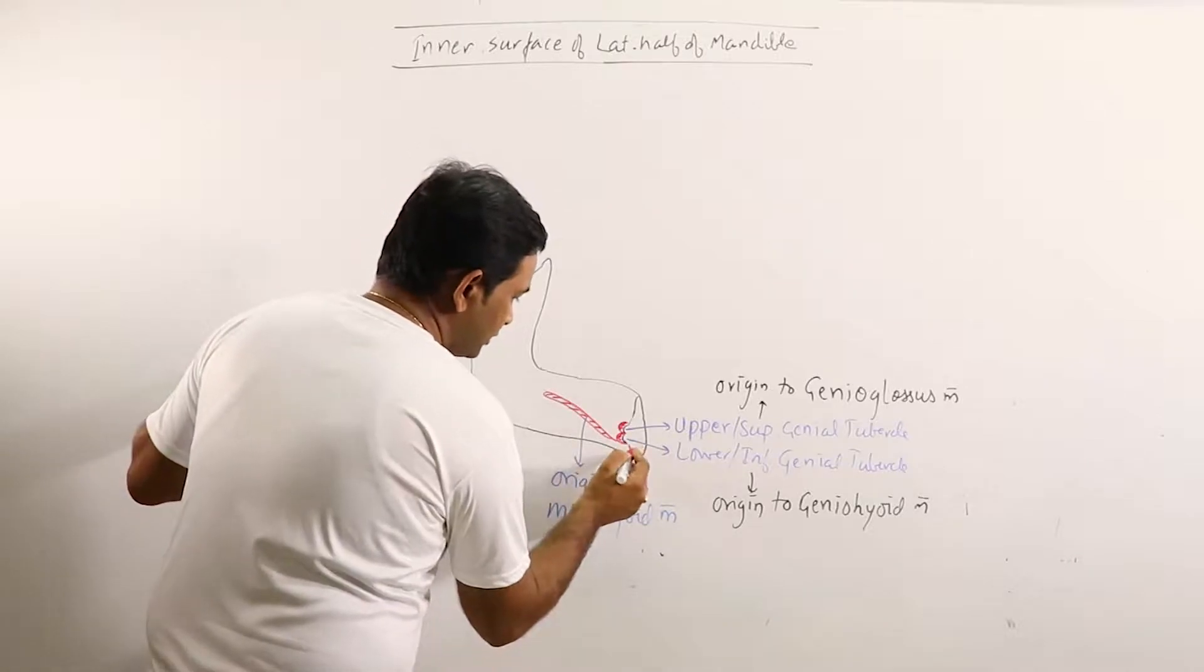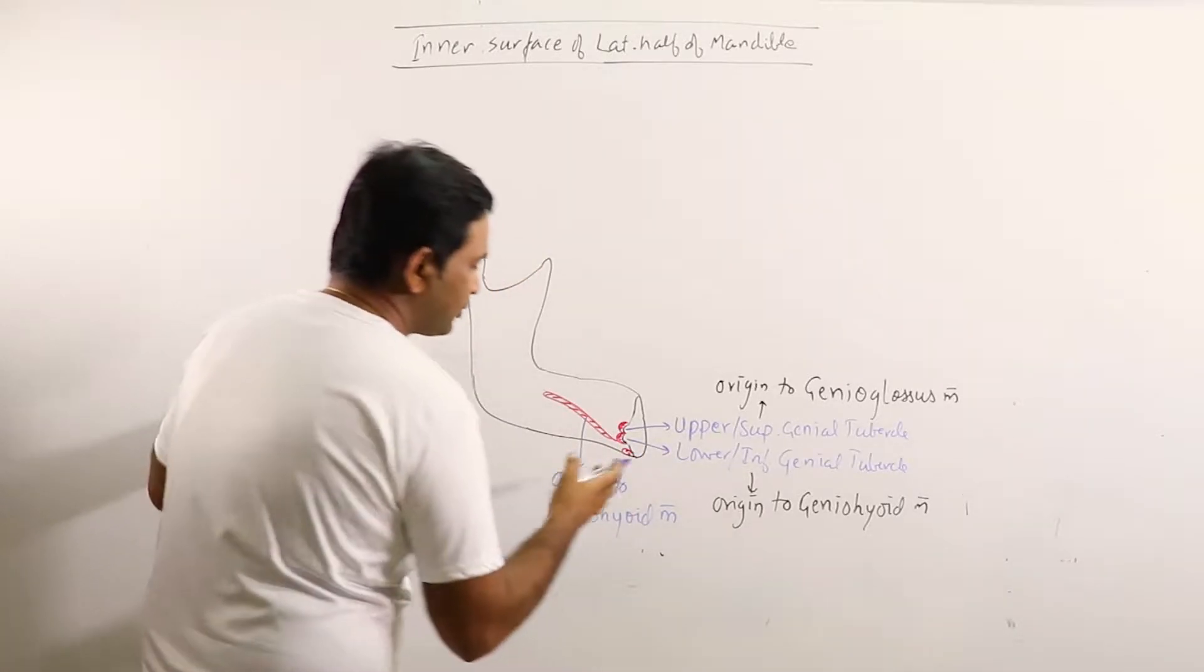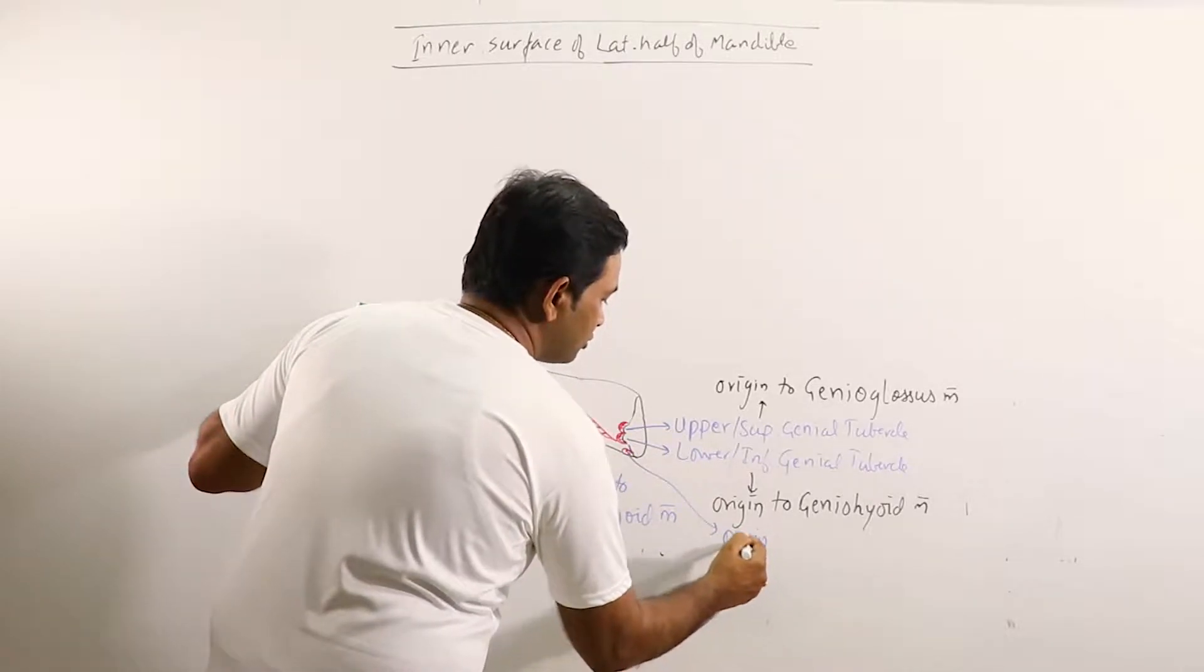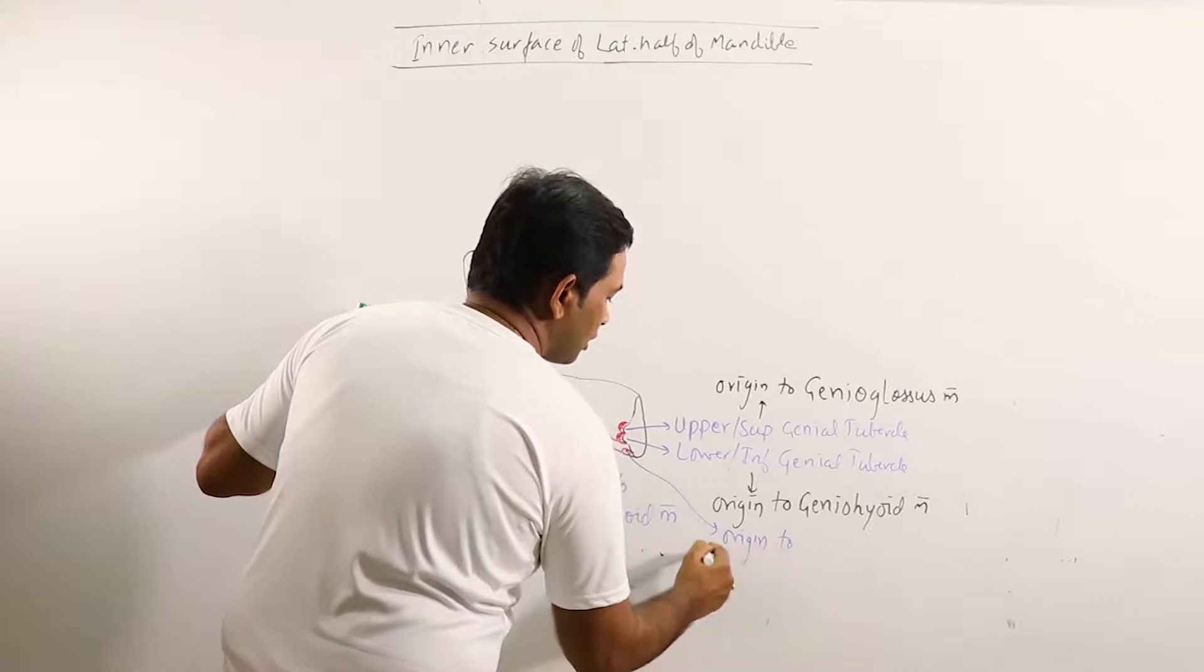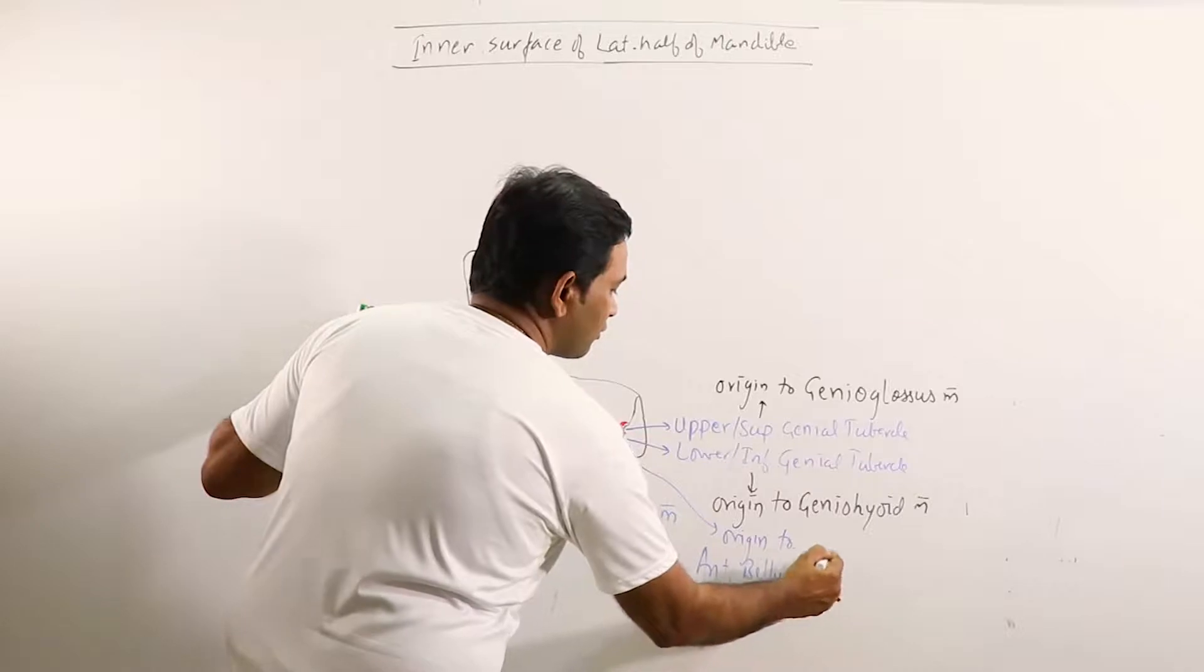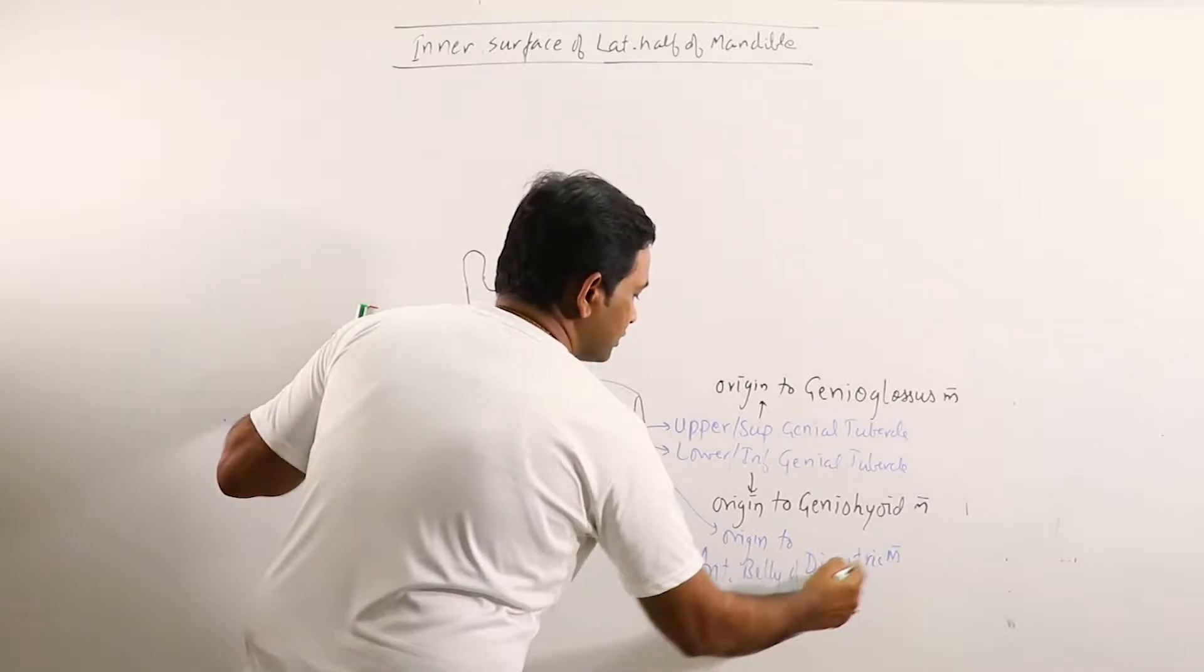Here is the digastric fossa and the digastric fossa gives origin to anterior belly of digastric muscle.